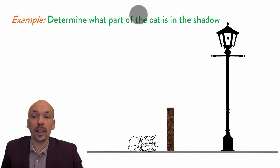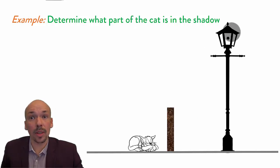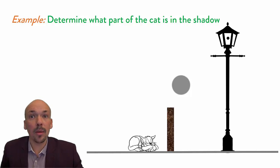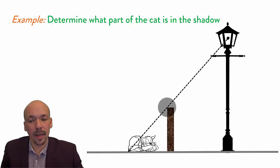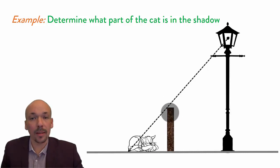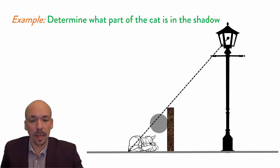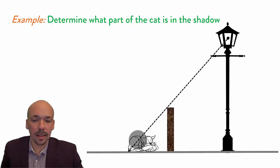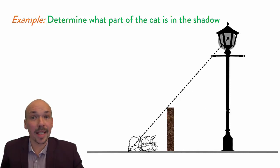Another example: determine the part of the cat that is in the shadow. We have a light source here, a wall, and a cat. We can determine the shadow boundary by drawing a straight line from the light source to the top of the wall and beyond. From there, no light passes because it is not transmitted through the wall — it is either reflected or absorbed. Part of the cat is in light: its back is lit, but its face is not, so the cat will not see the light directly.